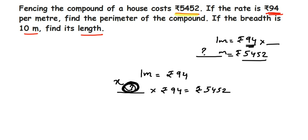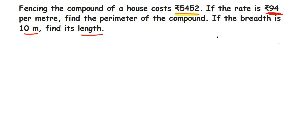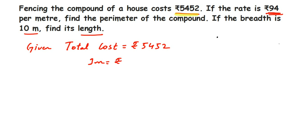Let me frame it as an equation. Let the total perimeter be x. So x × 94 = 5452. Transposing 94 to the other side gives x = 5452 ÷ 94. Given: total cost = rupees 5452, per meter rate = rupees 94. Therefore, perimeter of compound = 5452 ÷ 94.